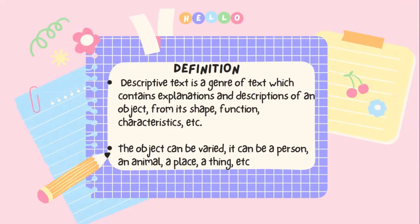What is the definition of descriptive text? Descriptive text is a genre of text which contains explanation and description of an object — from its shape, function, characteristics, and etc. Jadi, descriptive text adalah sebuah teks yang berisi tentang penjelasan atau penggambaran atau deskripsi dari sebuah objek, dimulai dari bentuk, fungsi, karakteristik, atau ciri-cirinya, dan lain sebagainya.